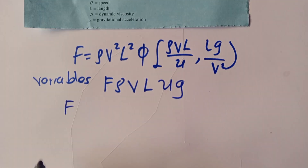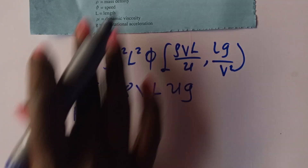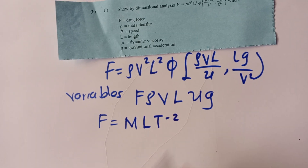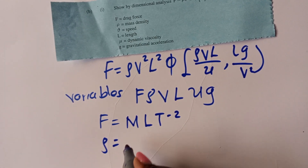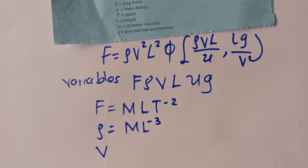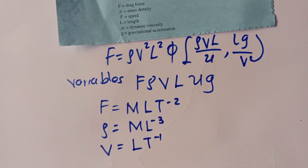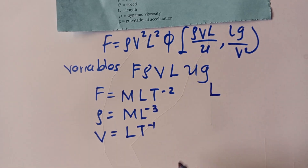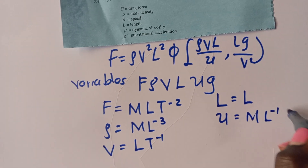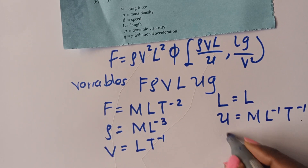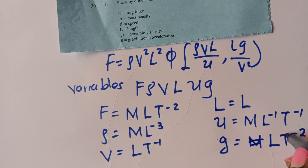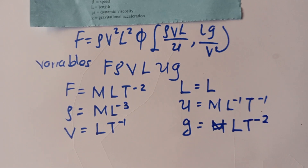The dimension of each variable: F, the drag force, is M L T⁻². Rho, the mass density, is M L⁻³. V, the speed, is L T⁻¹. L, the length, is simply L. Mu, dynamic viscosity, is M L⁻¹ T⁻¹. G, acceleration due to gravity, is L T⁻². So we have six variables in total.